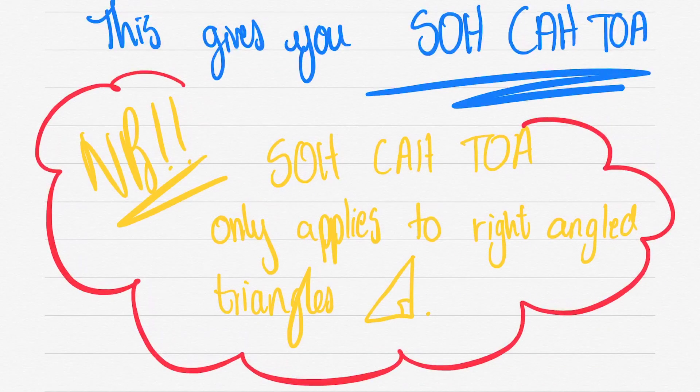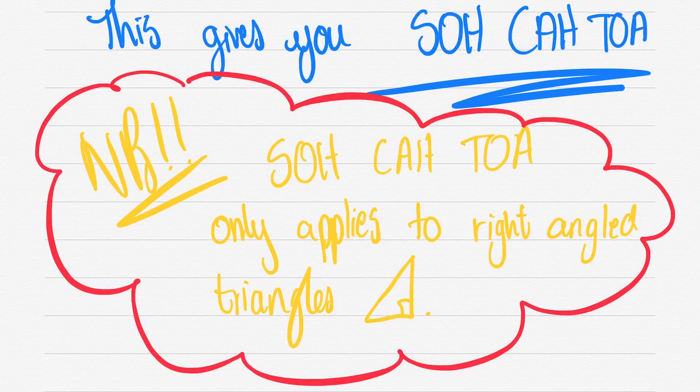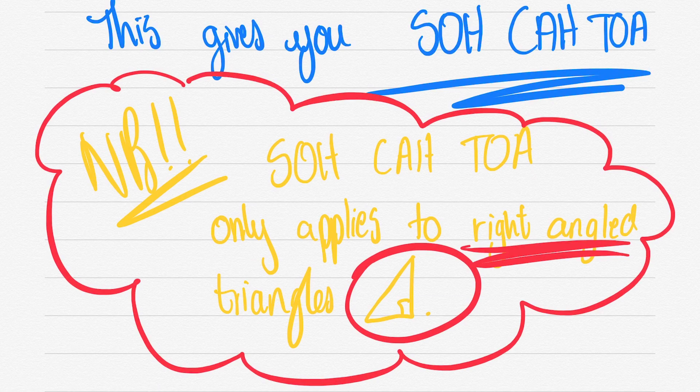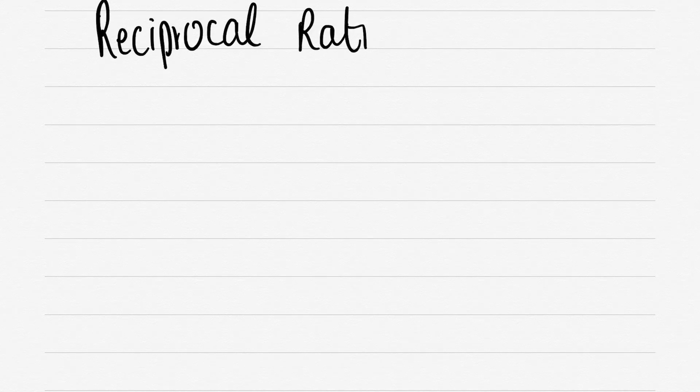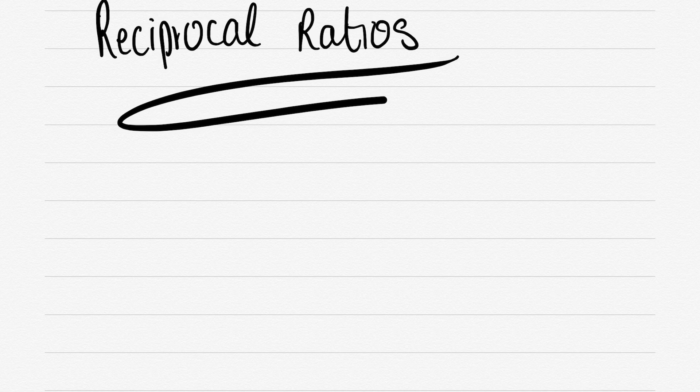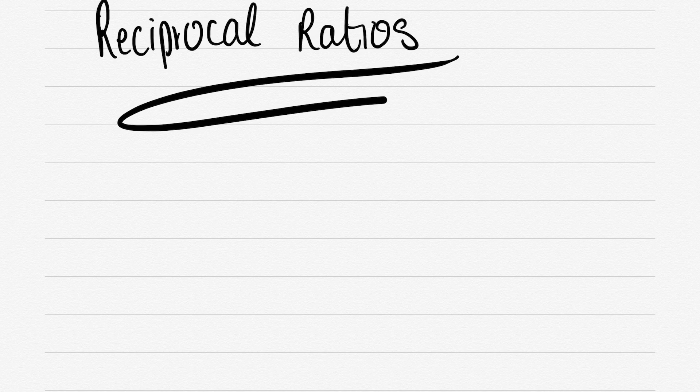SOH CAH TOA, don't forget that. If you want the notes, just remember thinkbrainwave.com. We've got everything there for you. And as I said, right angled triangles, do not forget it. They might very well trick you. They give you like a non-right angled triangle and say, do SOH CAH TOA or do trigonometry, try and find this out. All you say is, if they say specifically using trigonometry, you say unfortunately this is not a right angled triangle and the operation will not work. So now it's going to get a little bit more, what could seem like complicated, but it's actually very simple. We're doing reciprocal ratios.